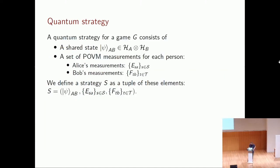Formally, a strategy consists of a shared quantum state prepared beforehand, where Alice and Bob each hold their part without access to the other's subsystem. Each of Alice and Bob also has a set of POVM measurements corresponding to every possible question — these are the measurements they apply to the state. The strategy is this complete tuple.